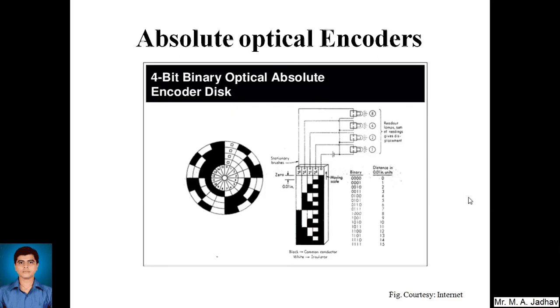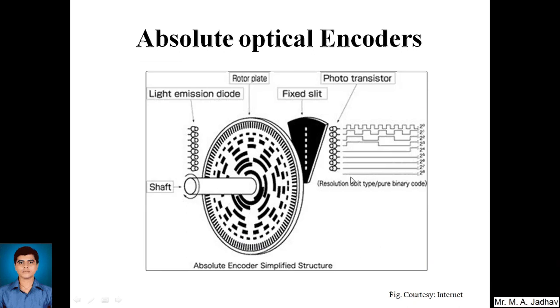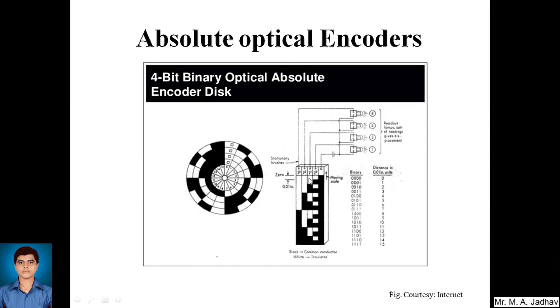A 12-bit absolute encoder would have 12 tracks and the same coded value only appears once per revolution. In this diagram, a 4-bit binary optical absolute encoder disc is present. For 4 bits we have 1, 2, 3, and 4, four tracks of transparent and dark segments. Each combination of these 4 bits will have some value. For each combination of these bits we have a binary number.